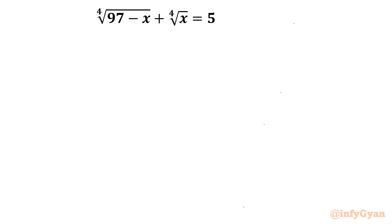Hello everyone, welcome to InfiJaan. In this very exciting video of algebraic challenging equations, we will be solving: 4th root of (97 minus x) plus 4th root of x equals 5. While solving, we will use algebraic identities, manipulation, Pascal's triangle, the quadratic equation formula, and we will conclude our result.